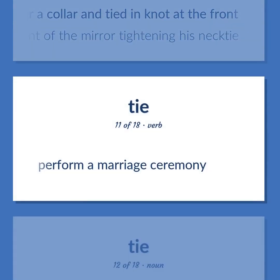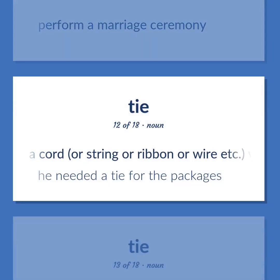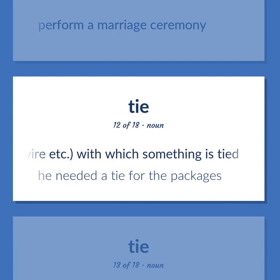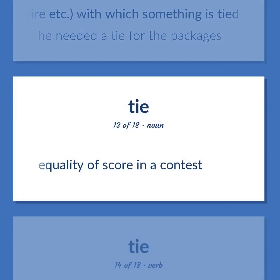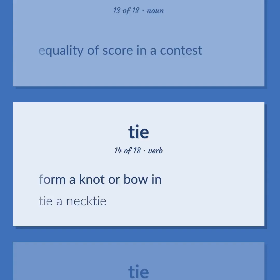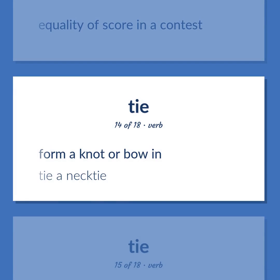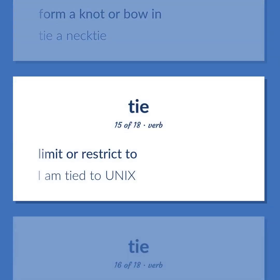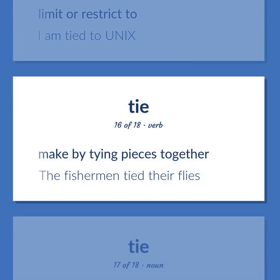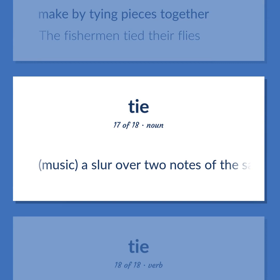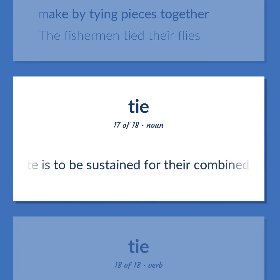Perform a marriage ceremony. A cord, or string, or ribbon, or wire, etc., with which something is tied. He needed a tie for the packages. Equality of score in a contest. Form a knot or bow in. Tie a necktie. Limit or restrict to. I am tied to Unix. Make by tying pieces together. The fishermen tied their flies. Music: a slur over two notes of the same pitch, indicating that the note is to be sustained for their combined time value. Unite musical notes by a tie.